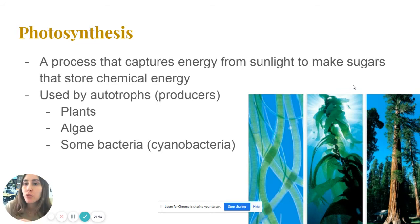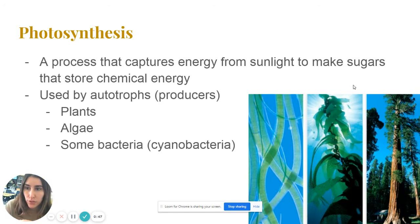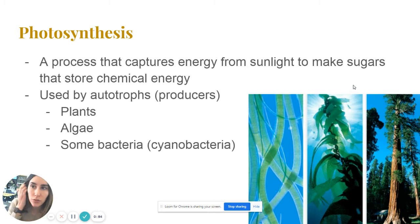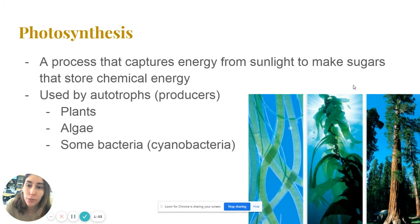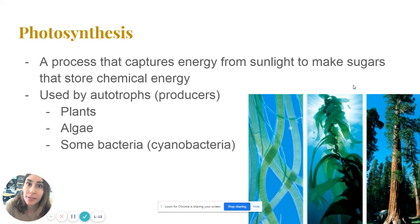This process is mainly used by autotrophs, which are organisms that make their own food, and they're often also referred to as producers. Examples of autotrophs are plants — that's the most common example. But actually, algae and also some types of bacteria, for example cyanobacteria, which are found in water bodies, are also able to photosynthesize, which means they can capture sunlight and convert it into sugar, just like plants can.